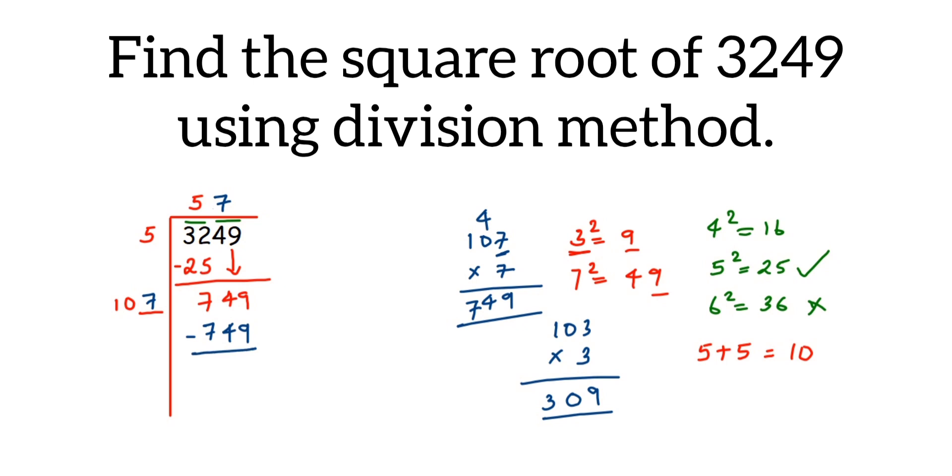Now subtract these two, we get 0. We get 0 means this number is a perfect square number. The square root of 3249 equals 57. The number you obtained in the quotient will be the square root of that number.